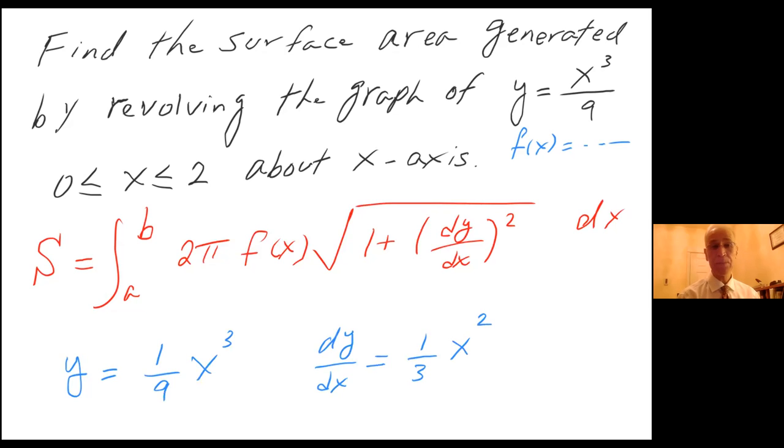I'm going to go to the next page and say that (dy/dx) squared equals one third x squared to the second power. That gives me x to the fourth. One third times one third is one over nine.